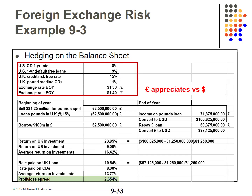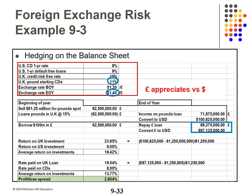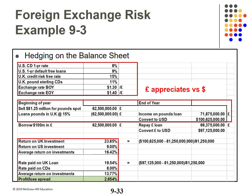The second scenario in Example 9.3 uses the same base data but the end-of-year rate goes up to $1.40 to the pound. At the beginning of the year, borrow $100 million in pounds at 11% (62,500,000 pounds at $1.30). At year end, repay the CD loan of 69,375,000 pounds and convert back to $97,125,000. Also at beginning of year, convert $81.25 million to pounds and loan in the UK at 15%. At year end, collect 71,875,000 pounds and convert back to $100,625,000. Profit spread: 2.654%.